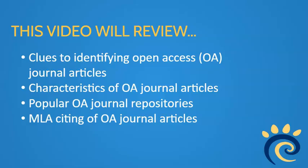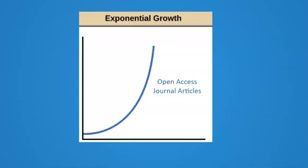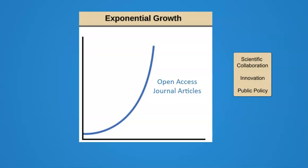This video focuses on how to identify open access journal articles. More and more current articles are being published as open access journal articles, since it allows for broader dissemination of research, which can promote scientific collaboration and innovation and inform public policy.